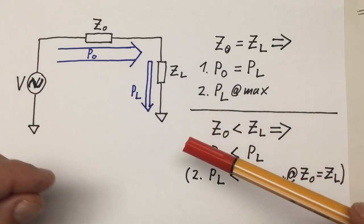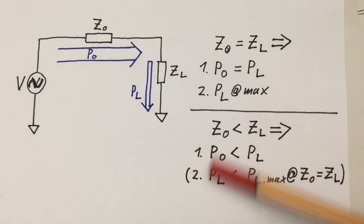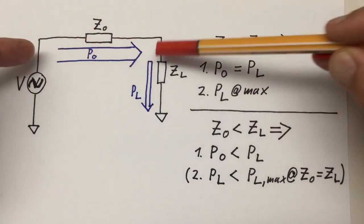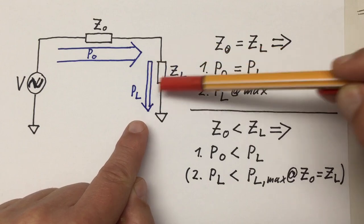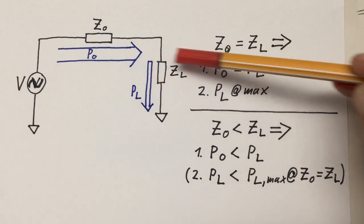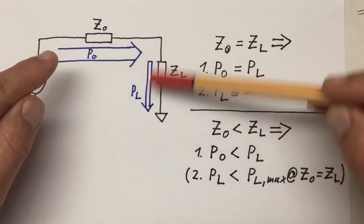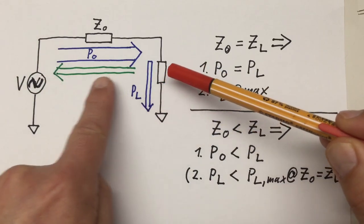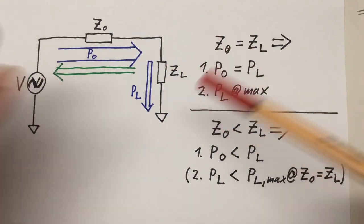But if Z₀ is smaller than Z_L, the following is true. First, the power dissipated in the transmission line is of course smaller than the power dissipated in our termination. And secondly, the power dissipated or received at the end is smaller than the maximum power we could receive when Z₀ is equal to Z_L. So far everything was absolutely correct, but now comes a little semantic gap and jump. If we're transferring through the signal line a lot of power in form of electromagnetic wave and only a smaller part of that power is absorbed in our termination at the end of the line, then where does the difference go?